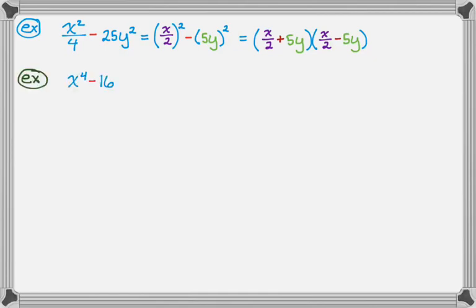So here it is. We have x to the 4th minus 16. So x to the 4th is actually a perfect square. If you look at it, it's actually x squared squared. So we can still do this. And then 16 is definitely a perfect square, right? That's 4 squared. And now let's just plug in. So we get x squared plus 4 and x squared minus 4.